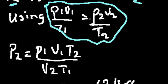We are asked to calculate or determine the value of P2. If we make that the subject of the formula, we are going to have P2 equals P1V1T2 over V2T1.